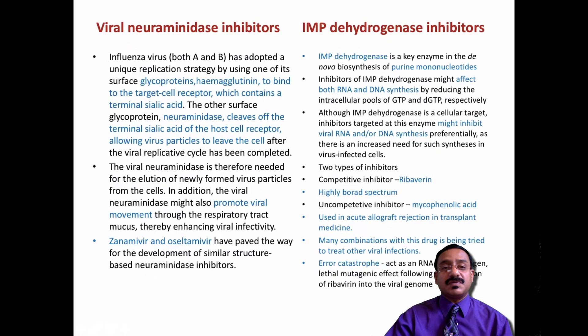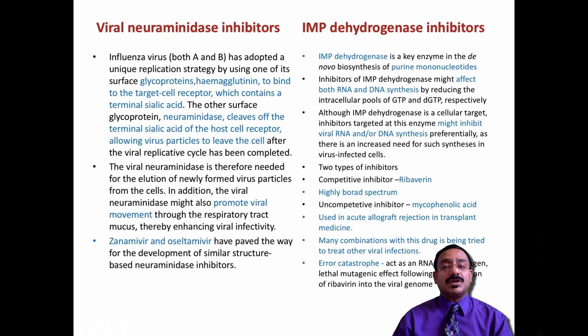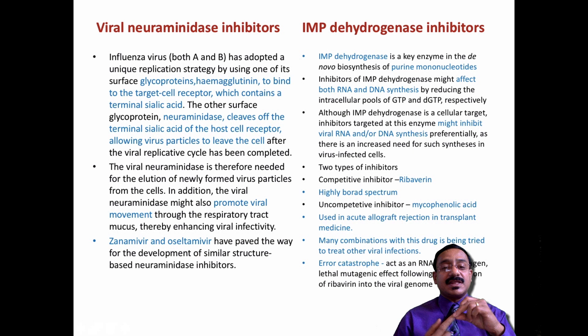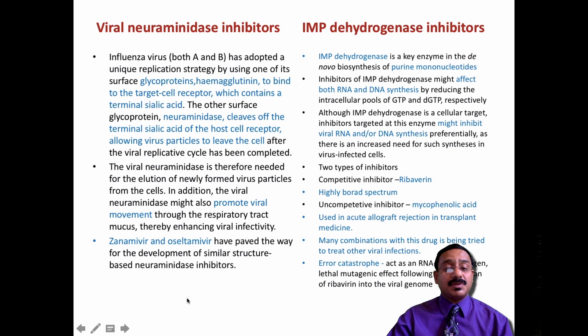Viral neuraminidase inhibitors are particularly important for influenza virus. The influenza virus has two important glycoproteins: hemagglutinin (HA), which binds to the target cell receptor containing terminal sialic acid, and neuraminidase (NA), which cleaves off this terminal sialic acid. The host cell has terminal sialic acid that interacts with neuraminidase — inhibiting this prevents further viral movement. Two key examples are zanamivir and oseltamivir, which are widely used for influenza.